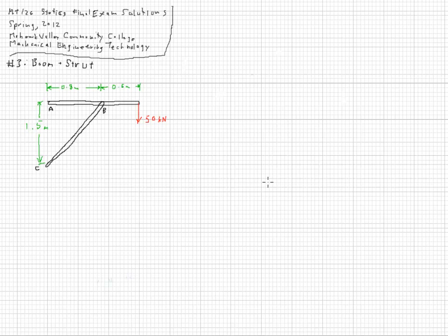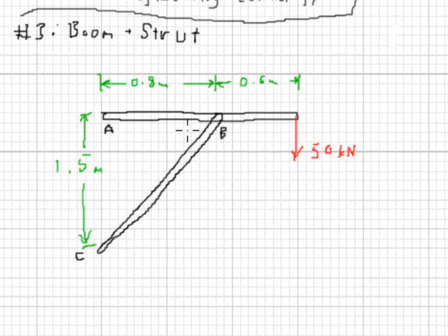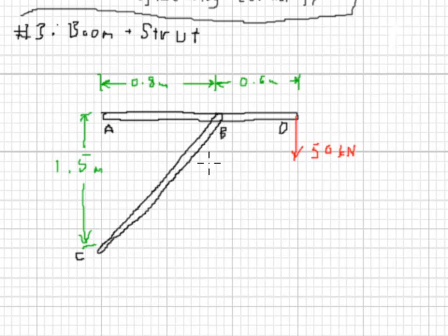This is problem number three for the statics final exam, spring 2012. This is a classic boom-and-strut problem where we have a beam or boom hanging out over its supporting strut, which is member BC. The beam has loading at least three places — in this case A, B, and D — and the strut only has loading at two locations, C and B. Struts therefore have their forces aligned with the geometry of the member, so we'll use that in a little bit.